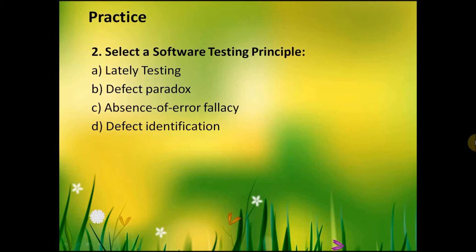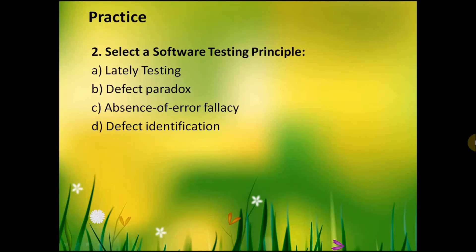Question two: select a software testing principle. A — late testing: no such principle. B — defect paradox: no. C — absence of error fallacy: yes, this is a valid principle. D — defect identification: no. The correct answer is C, absence of error fallacy.